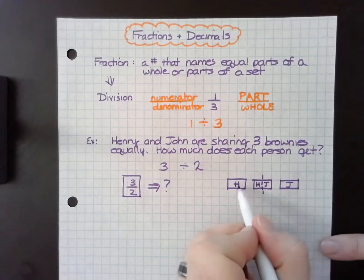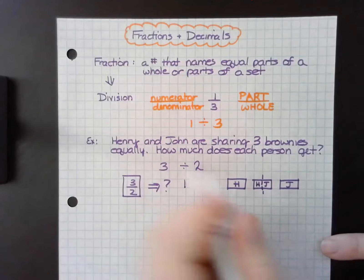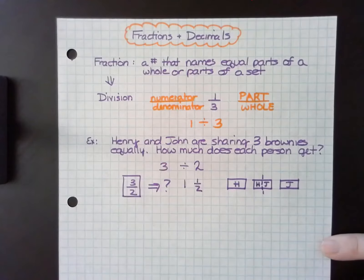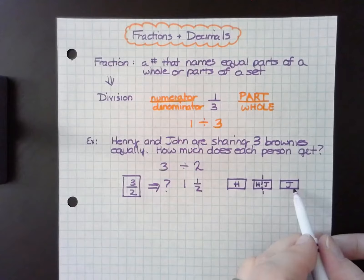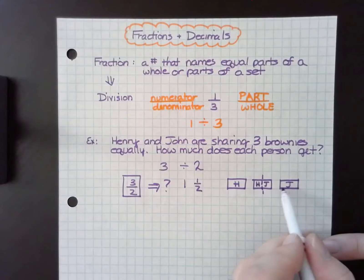It means that Henry will get one whole and a half. Same with John. John gets one whole and a half.